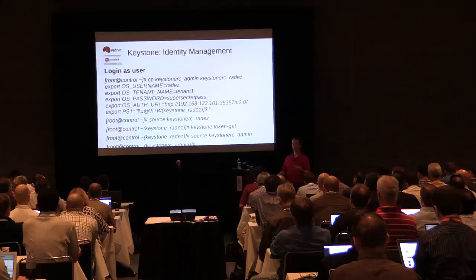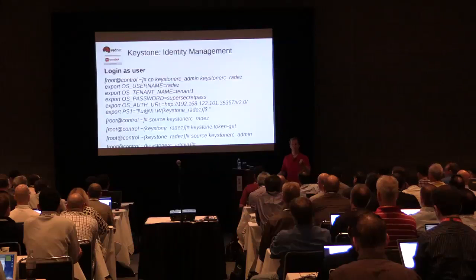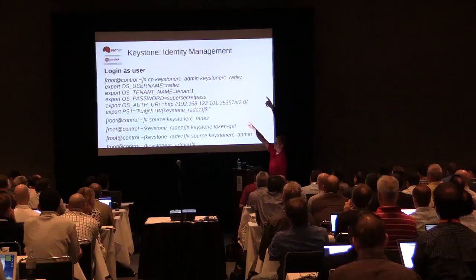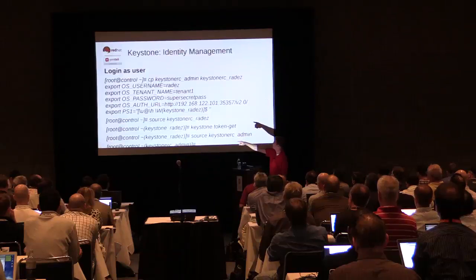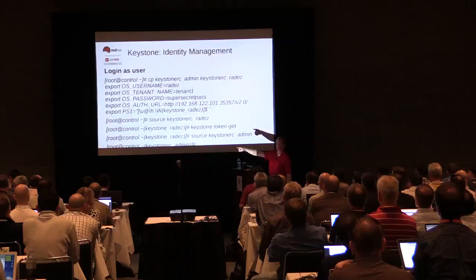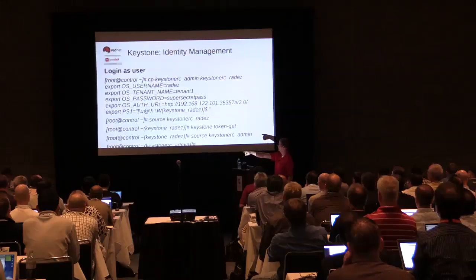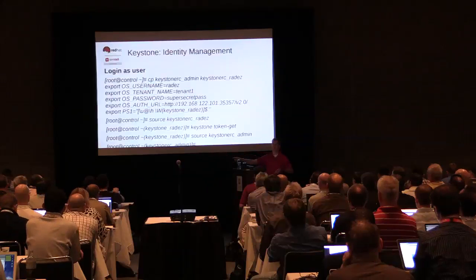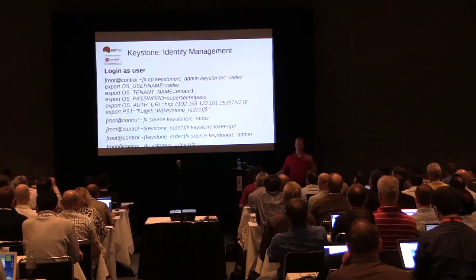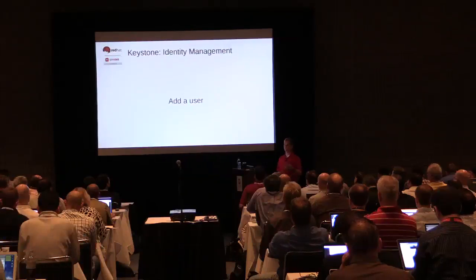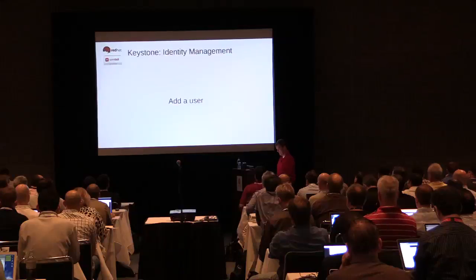If you have a new user on the command line, you can copy the RC admin file to RC underscore username, update the username and password, and then use it. I've created a new RC file with the new user, sourced it so those environment variables are set, then got a token as the new user, sourced the admin file, and I'm back as the admin user again.